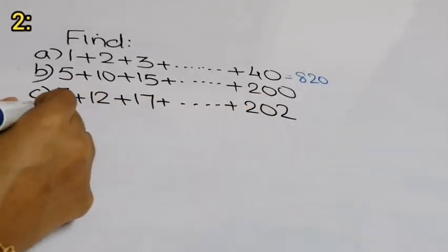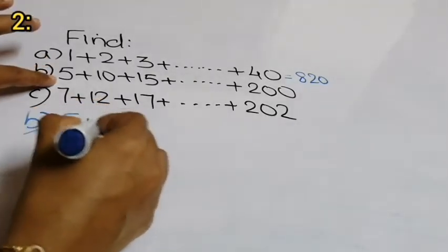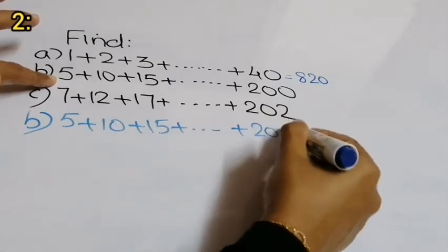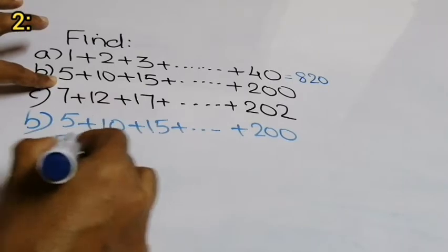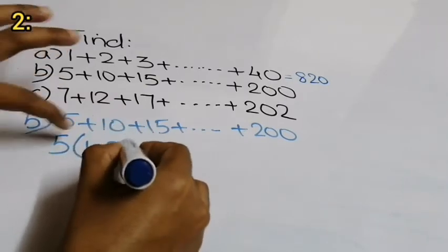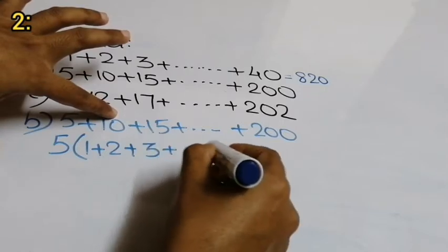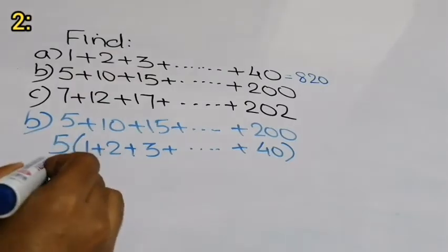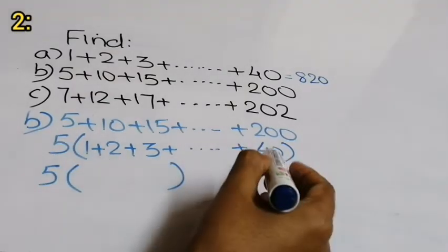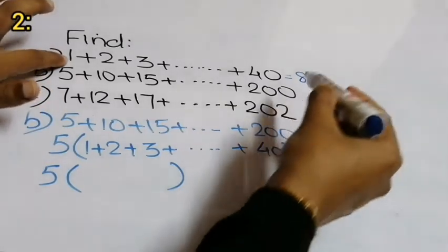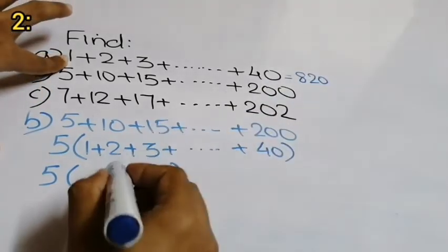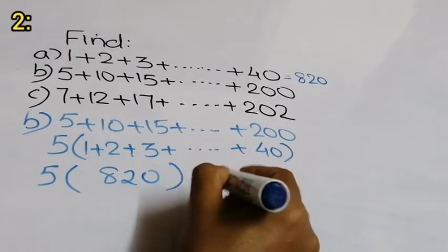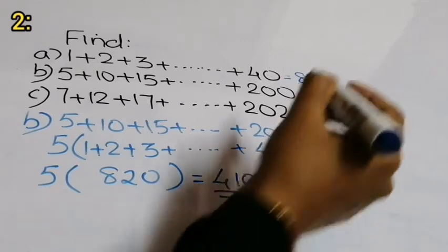Second part: 5 plus 10 plus 15 up to 200. These are multiples of 5 — 5 times 1 is 5, 5 times 2 is 10, 5 times 3 is 15, up to 5 times 40 is 200. Inside the bracket we have natural numbers 1 up to 40, whose sum we already know is 820. So the answer is 5 times 820, which equals 4,100.